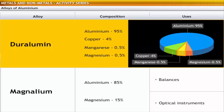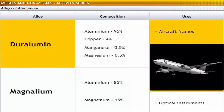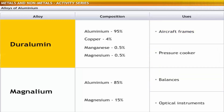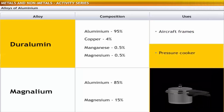Duralumin also contains 0.5% manganese and 0.5% magnesium. It is widely used in the aircraft industry because of its lightness and other desirable physical properties. It is also used in making pressure cookers to withstand high temperatures.